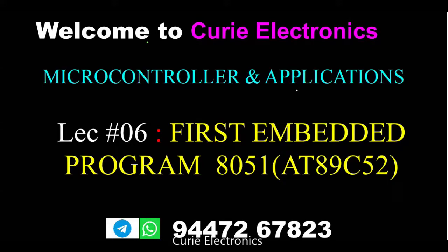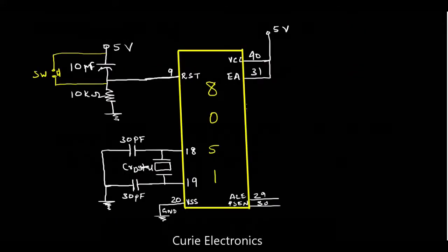Welcome to Curie Electronics. Today we are going to write our first embedded program for an 8051-based microcontroller. We are going to use the AT89C52, which is the Atmel-make 8KB ROM-based microcontroller. When you start learning microcontrollers or embedded development, it is very important to make a simple program and run it on hardware to feel the subject and to like the subject. Once you see it working, you will have more interest.